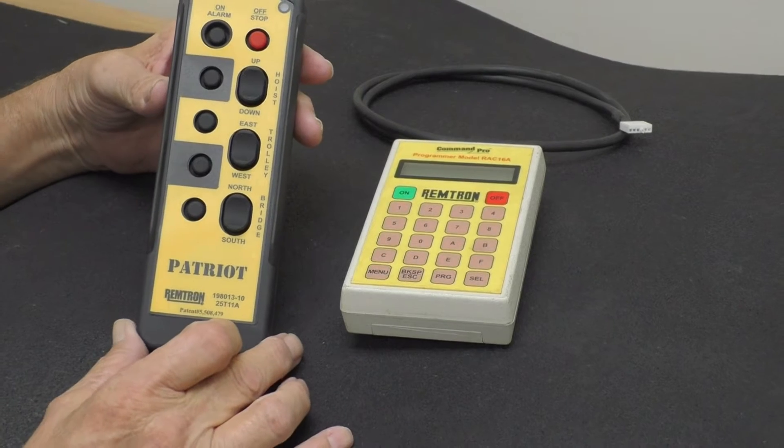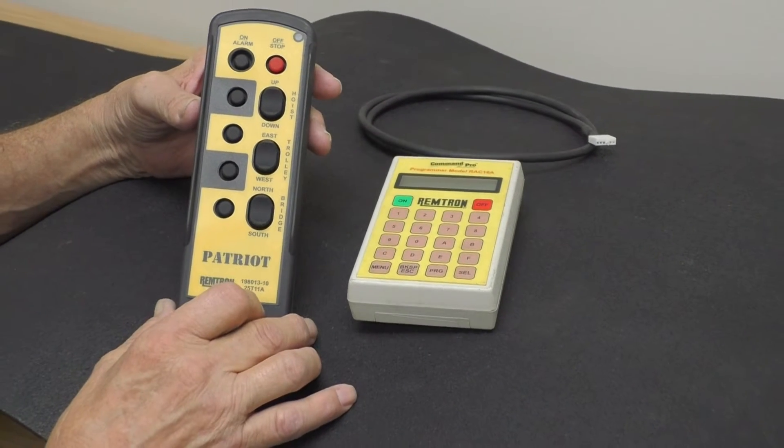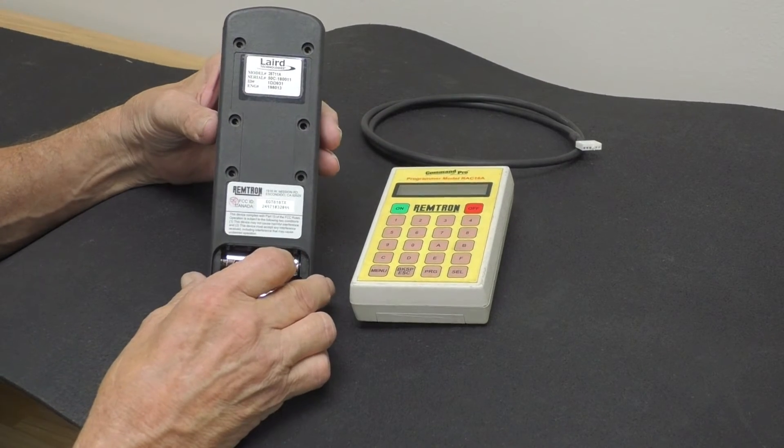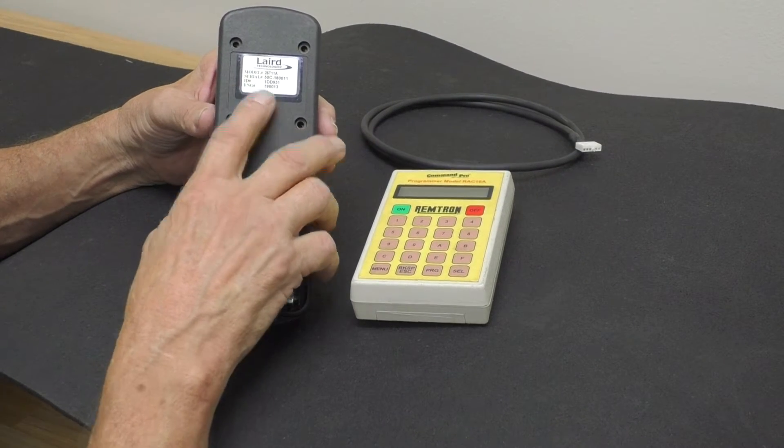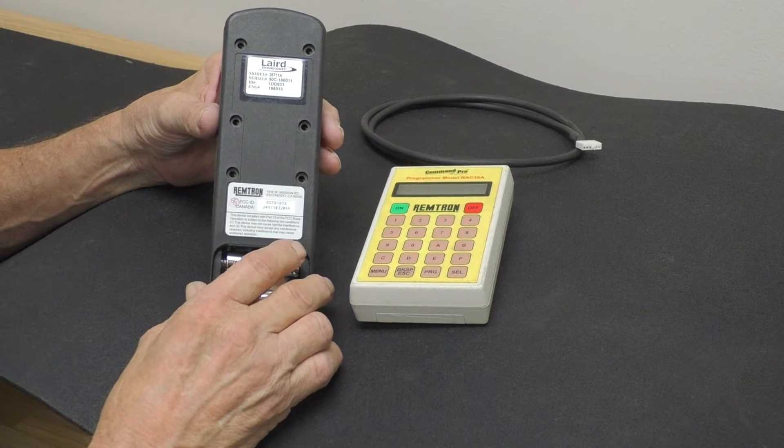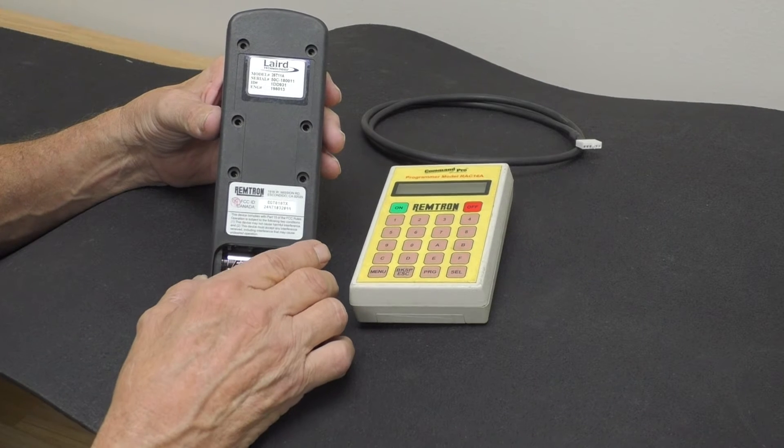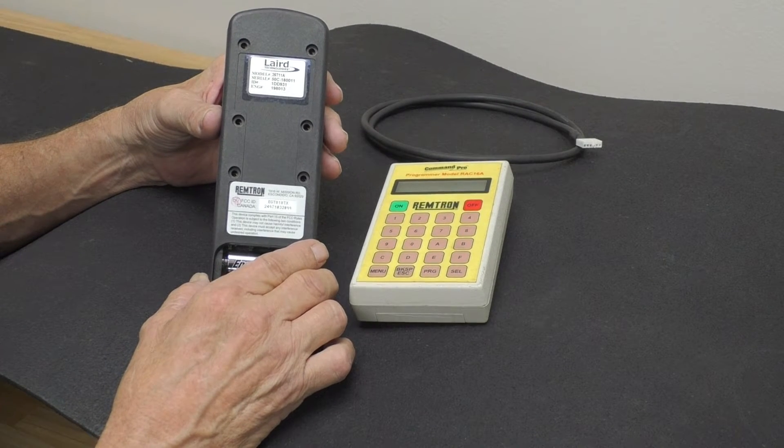On the REM-TOM, there is information that is needed in order to program. If you look on the back of the transmitter, there is an ID number. That ID number contains the frequency and the address code needed to correspond with the receiver.